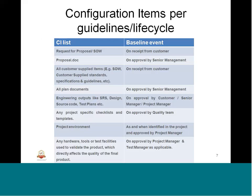We went through example life cycle CIs and various baseline events. For example, the project environment can be a CI. When a new tool, configuration data from customer, or technical documents arrive, they become part of the CI list with their own chain of operations. That is called a baseline event, and a particular baseline event will identify that particular configuration item.